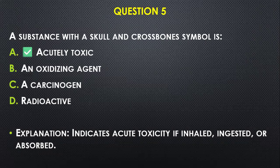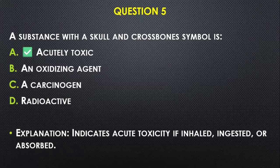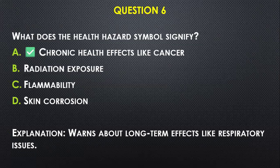Question number five: A substance with a skull and crossbones symbol is — A) acutely toxic, B) an oxidizing agent, C) a carcinogen, D) radioactive. When you see a skull with crossbones it is a sign that the substance is acutely toxic — it is toxic if you inhale it, ingest it, or absorb it.